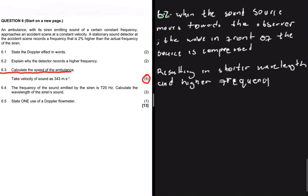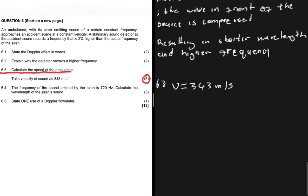Now for the interesting question, 6.3 — let's calculate the speed of the ambulance. We are given V = 343 m/s. We have some emitted frequency FS, of which we don't know the value. However, we are told that the frequency the listener picks up is 2% higher than FS. So FL = FS + 2% of FS.